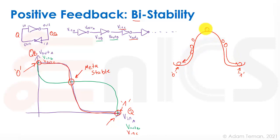It doesn't matter where we put the ball initially — it will always roll down to one of the two stable states. If you put it exactly on top, it may stay there briefly, but any tiny gust of wind will push it to one side. So that's not a truly good stable state — it's only a theoretical stable state, and it will fall down after a limited time.